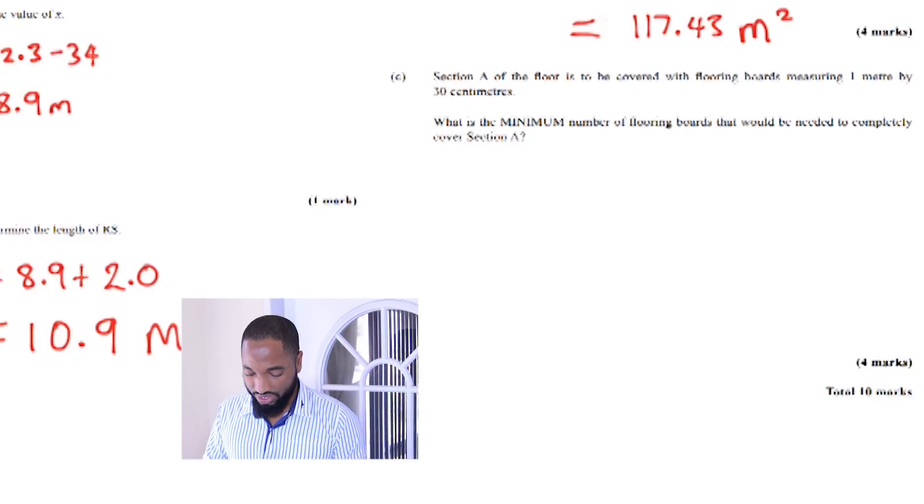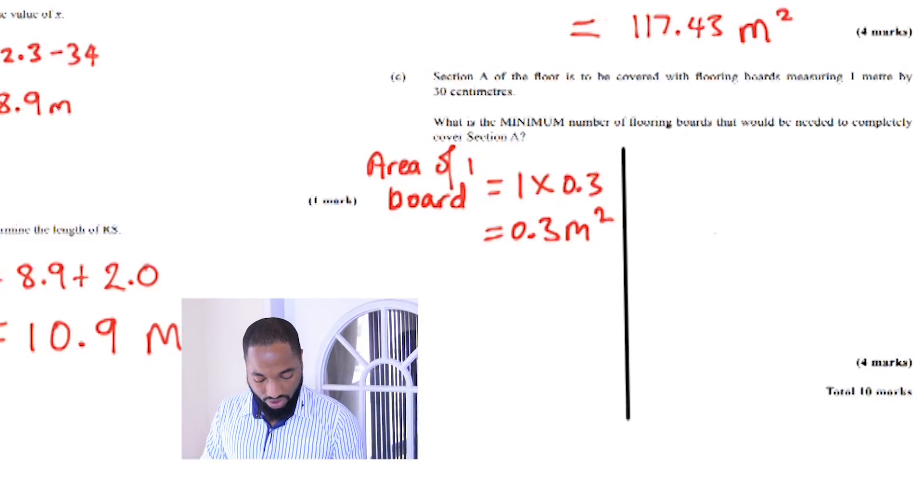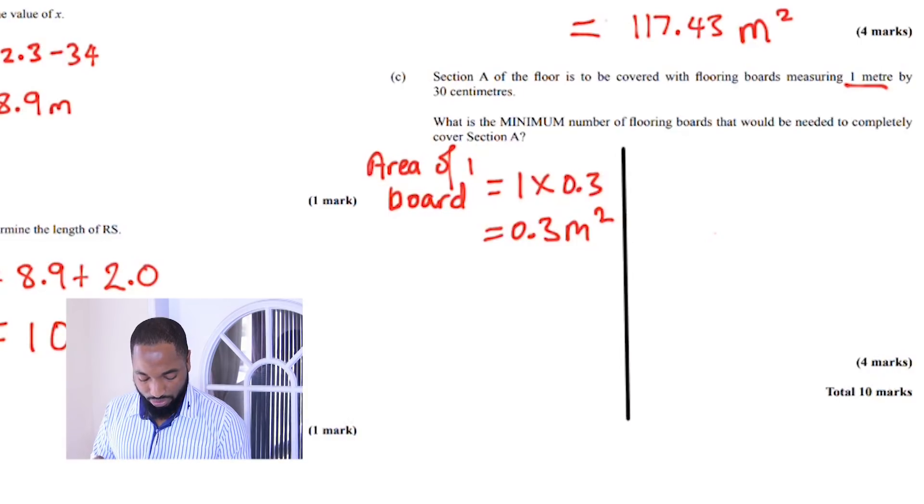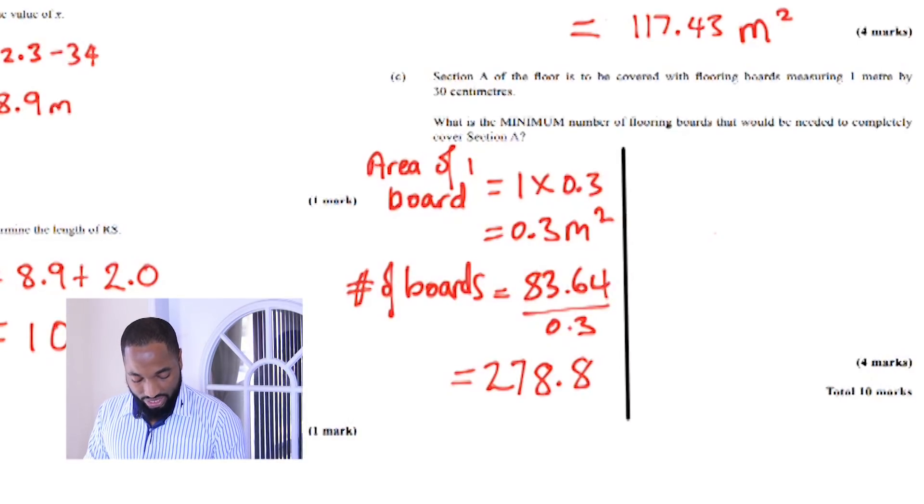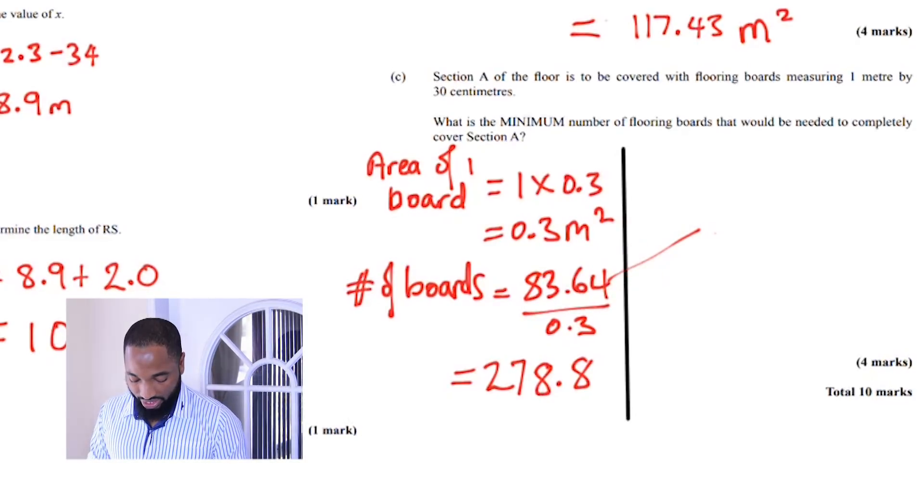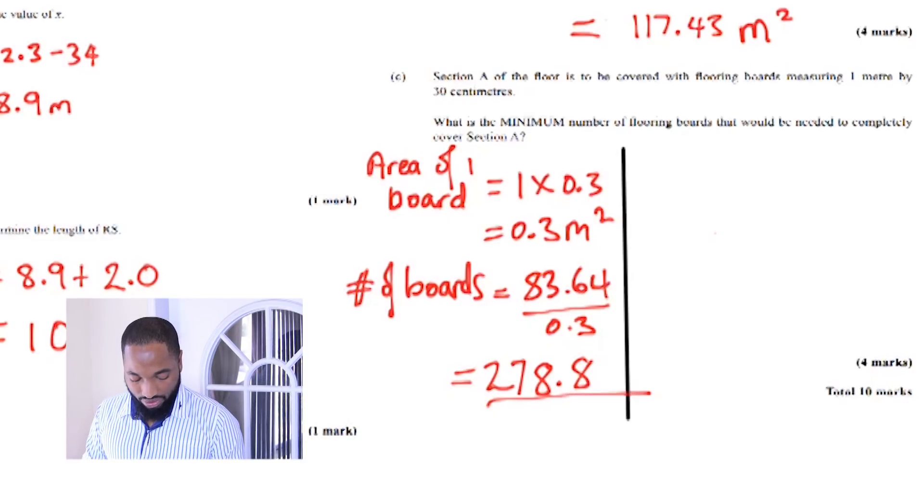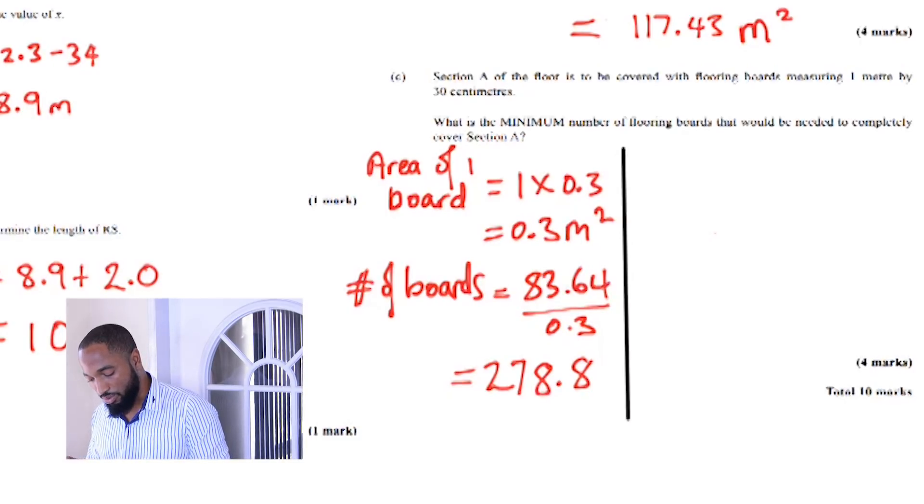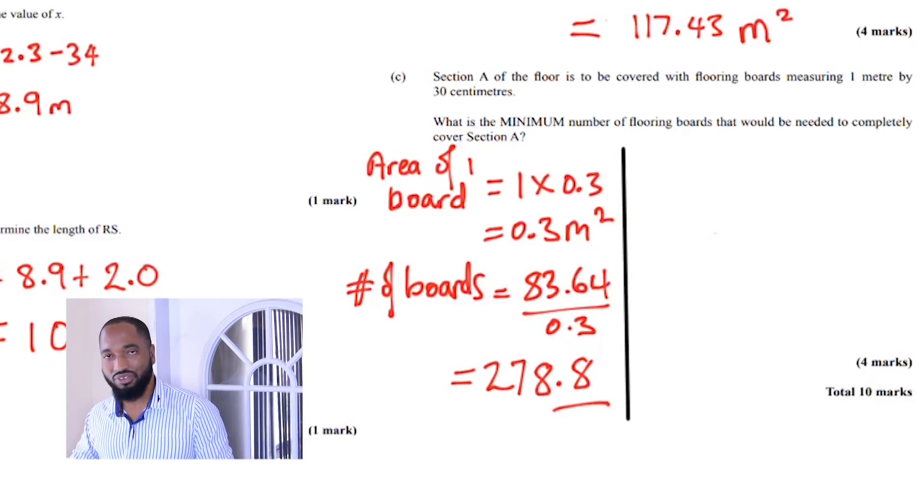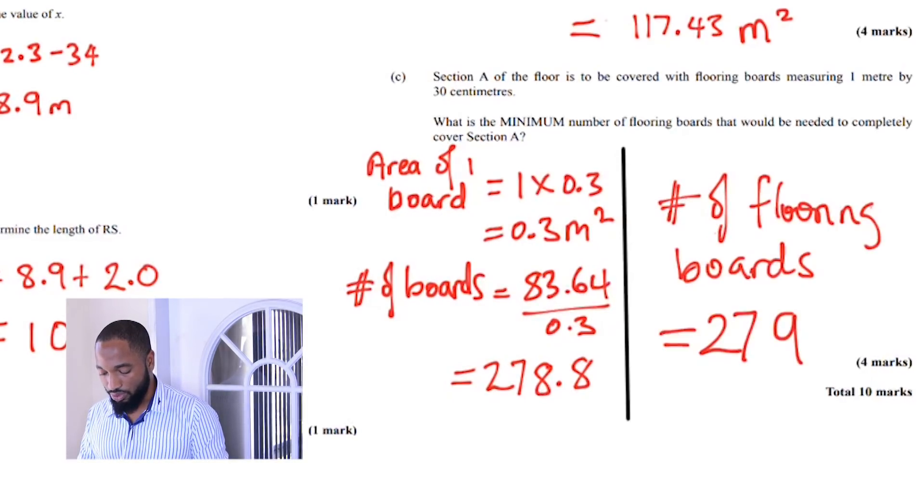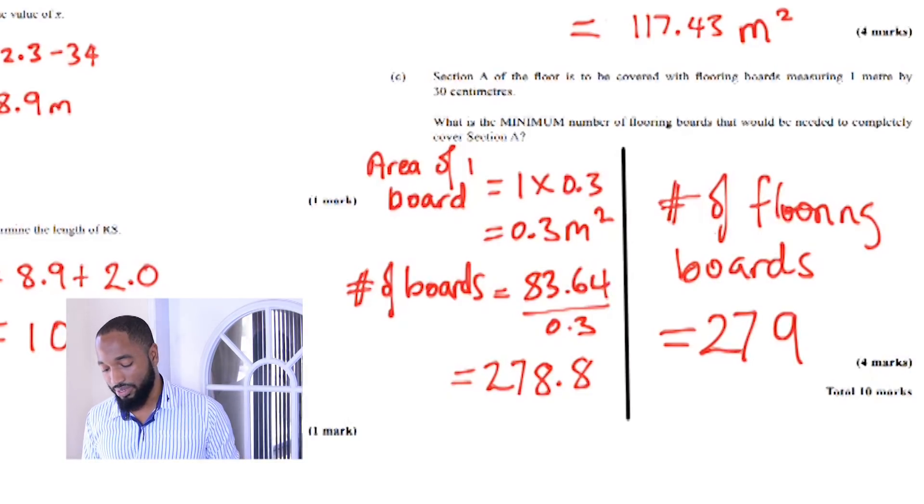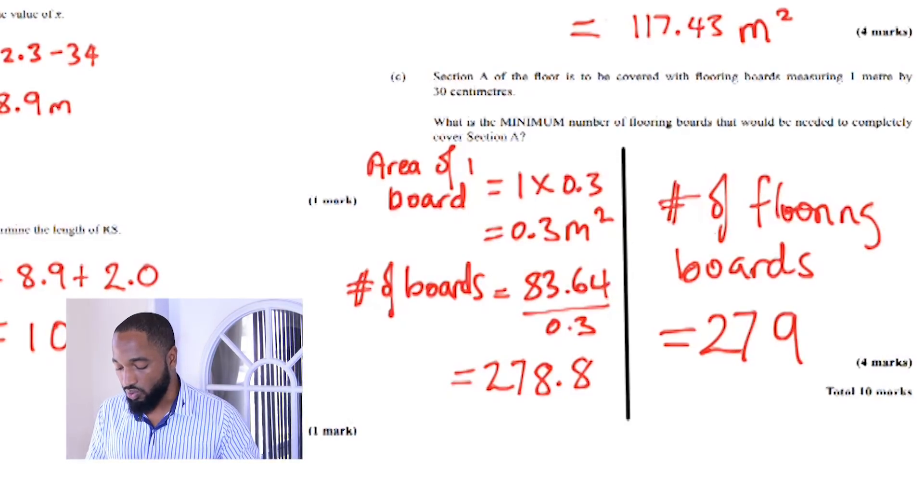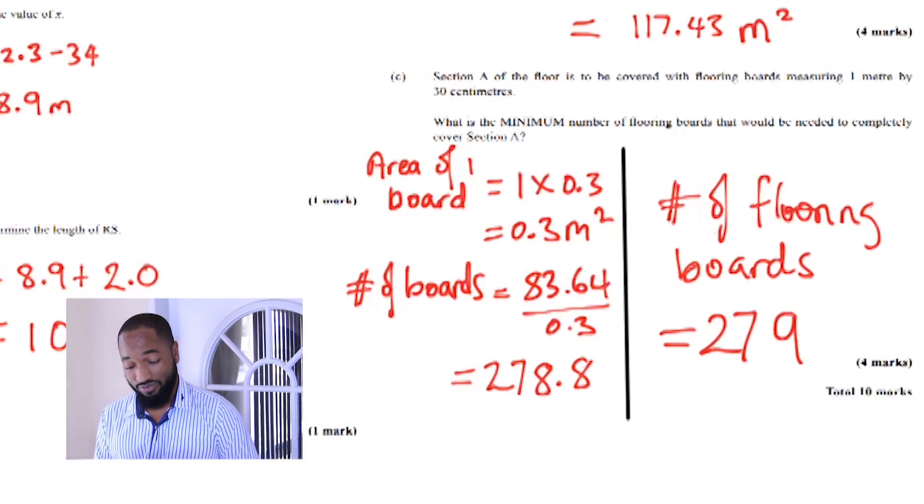Calculate the area of one flooring board. Area of one flooring board will be one meter by 30 centimeters. Then we divide to find the number of boards. Area of A divided by the area of one board. Now we have the number of boards needed, but there's a decimal place. They asked what was the minimum number of flooring boards needed. Since there's a point eight, you would actually have to go ahead and buy that whole board. The minimum number of flooring boards that you can use is 279. You'll have to round up because you'll need to buy the whole board. It's like the same thing with tiles—you can't buy half a tile. So 279 boards is the answer.